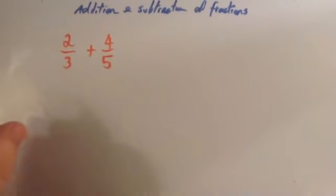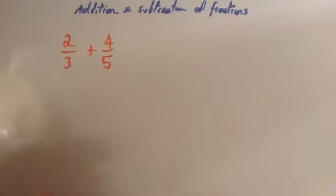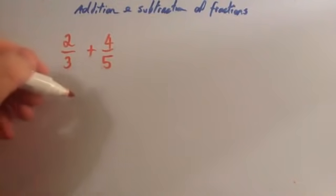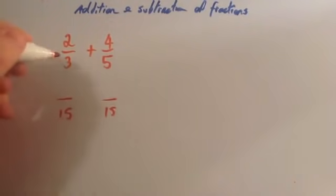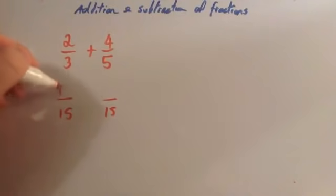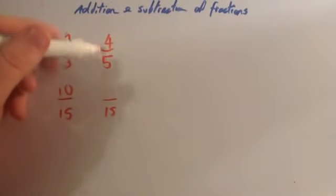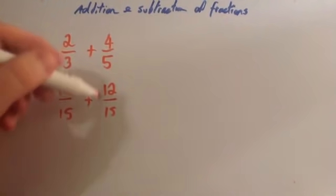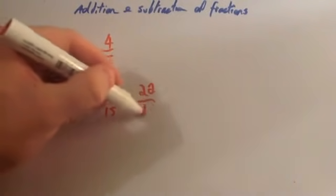Before we do this example, I would strongly recommend watching the video on improper fractions or top-heavy fractions and mixed numbers. So we want to do two-thirds plus four-fifths. Again, we want to find a common denominator — for three and five, we'll go for fifteen. To get from three to fifteen, you'd multiply by five, so you times the top number by five and you get ten over fifteen. To get from five to fifteen, you'd multiply by three, so four times three is twelve. So we've got ten-fifteenths plus twelve-fifteenths, which is twenty-two-fifteenths.